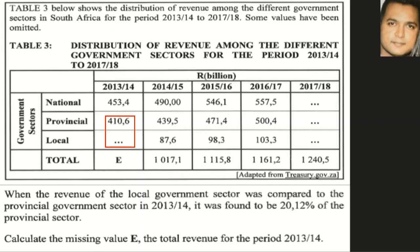To work out this missing amount, we are given that it is 20.12% of the provincial amount for 2013-2014. We are asked to calculate the missing value E, which is the total revenue for the period 2013-2014. To find E, we must first work out the local amount indicated by the red square, and then add all amounts together.